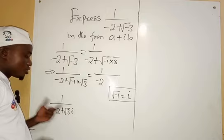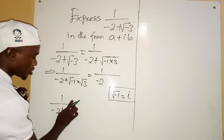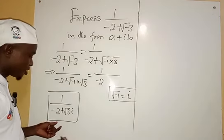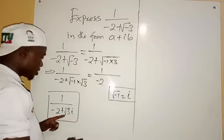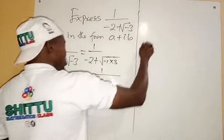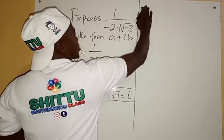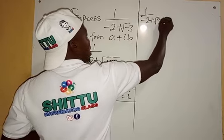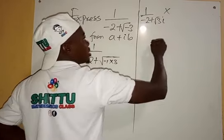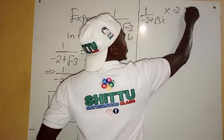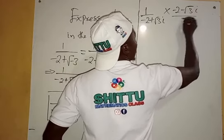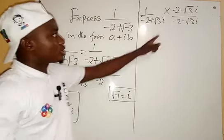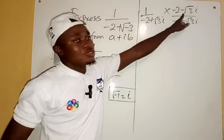You can put the i at the back or the front — it's the same thing. Now we're going to rationalize this using SURD rationalization, by taking the conjugate of the denominator. So we multiply by minus 2 minus root 3 i over minus 2 minus root 3 i. The conjugate is obtained by changing the positive sign to negative.